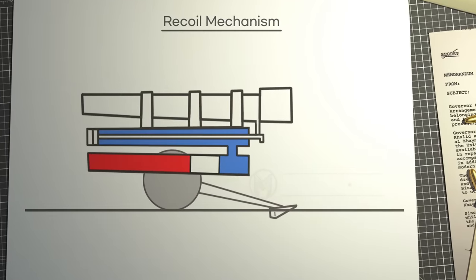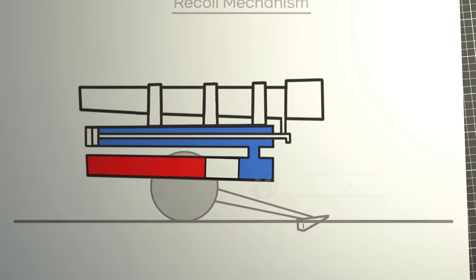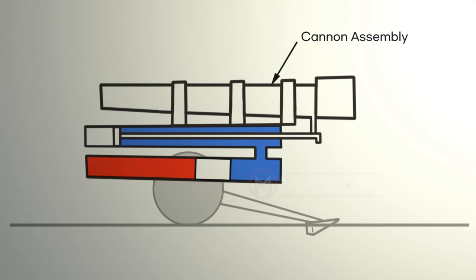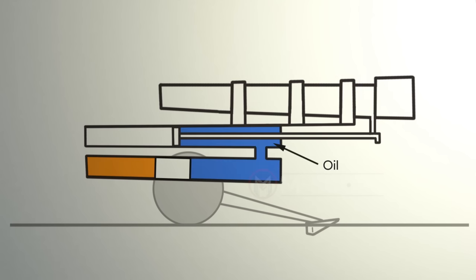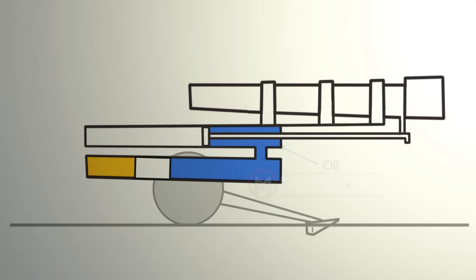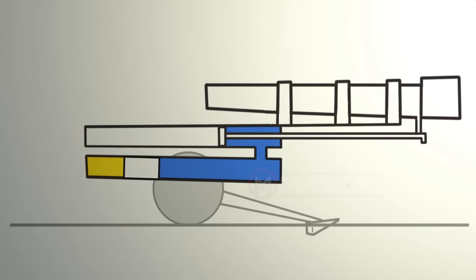The equipment that mitigates this pressure is called recoil mechanism. When a shell is fired and the cannon assembly retreats, the oil inside the recoil cylinder absorbs the energy. As the recoil mechanism absorbs the created force, the cannon assembly slowly comes to a stop.